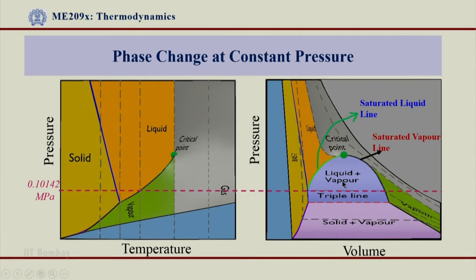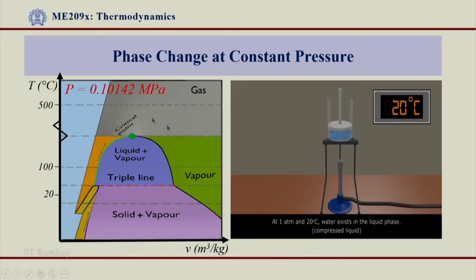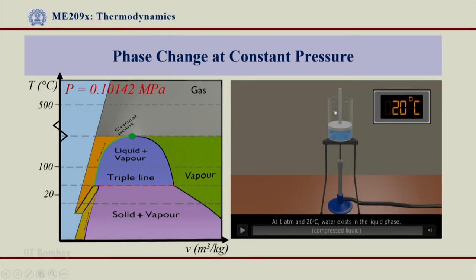Let us now show an animation of a process where we supply heat to water and see what happens. What you see here is a temperature-volume diagram, because it is convenient to show on a temperature-volume diagram when pressure is maintained constant. The pressure here is 0.10142 MPa. Here is the experimental setup: there is a small beaker with water shown by the blue-tinged medium, with a heat supply — a flame — and this water is maintained at 1 atmosphere and 20 degrees centigrade.